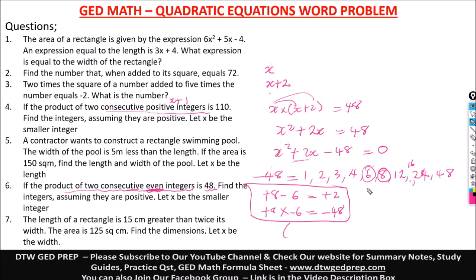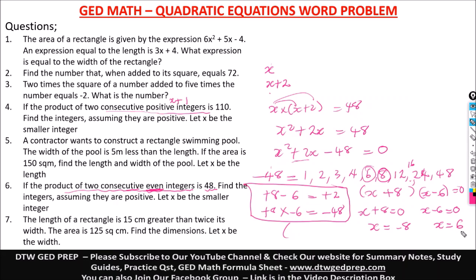Setting each to zero: x + 8 = 0 gives x = -8, and x - 6 = 0 gives x = 6. Since they are positive, x = 6. So our first integer is 6 and our second is 6 + 2 = 8. These are our two consecutive even integers.